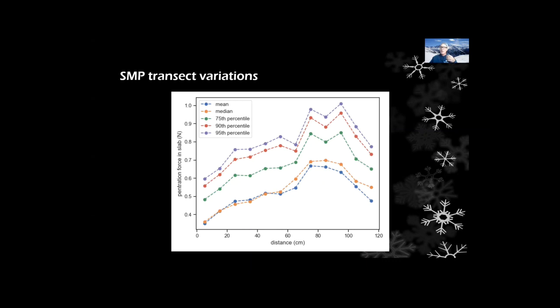We have a fairly large variation in our penetration resistance just across one of these hopefully uniform blocks. The differences that we're observing here are probably driving some of the scatter that we see in our data.